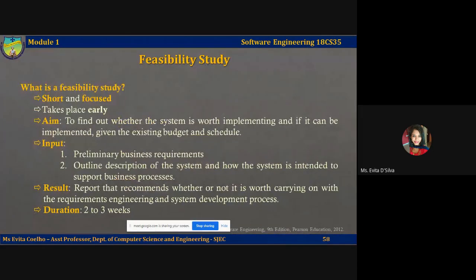In the previous lecture video we spoke about the requirements engineering process and the four important high-level activities. The first activity is the feasibility study. A feasibility study is a short focused study that should take place really early in the requirements engineering process. In fact, the requirements engineering process begins with the feasibility study. The aims of a feasibility study are to find out whether the system is worth implementing, and if it is worth implementing, can it be implemented given the existing budget and schedule.